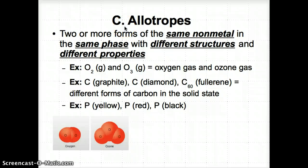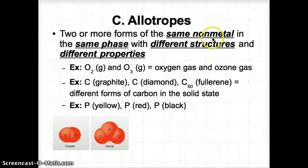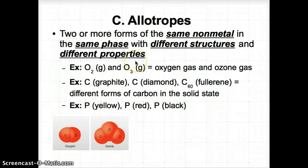Now let's talk about allotropes. Allotropes are two or more forms of the same non-metal in the same phase, but with different structures and therefore different properties. They're the same non-metal in the same phase, but because they're arranged differently, they have different properties.